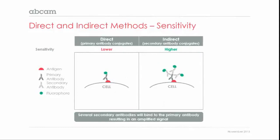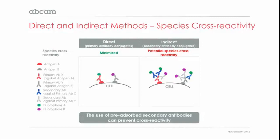Moving on to sensitivity. Primary antibody conjugates usually provide lower sensitivity because there is no signal amplification from a secondary antibody. When using secondary antibodies, several will bind to the same primary antibody, resulting in an amplified signal not provided by primary antibody conjugates. Generally, primary antibody conjugates result in lower sensitivity than secondary antibody conjugates.